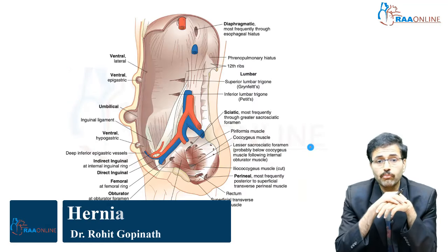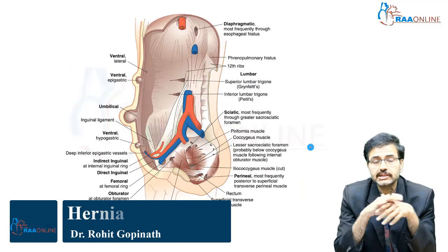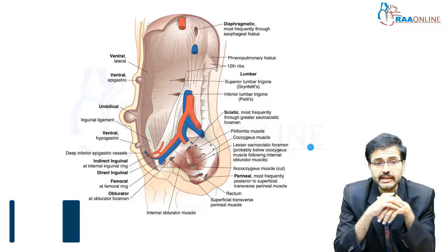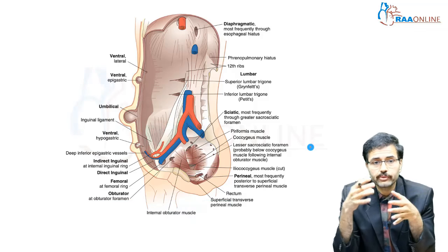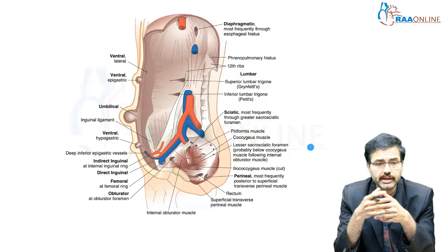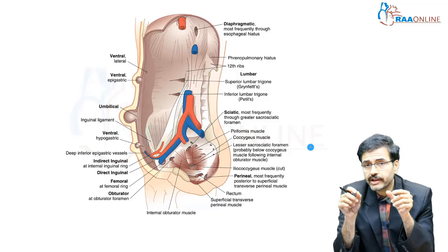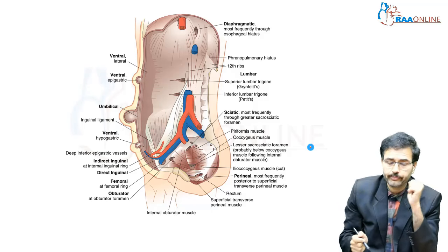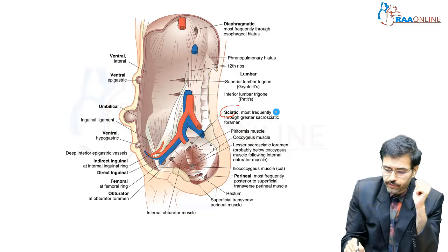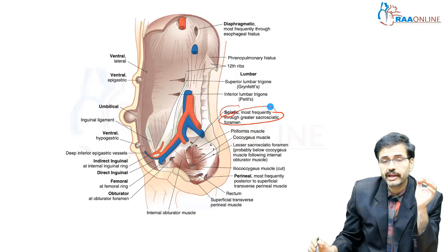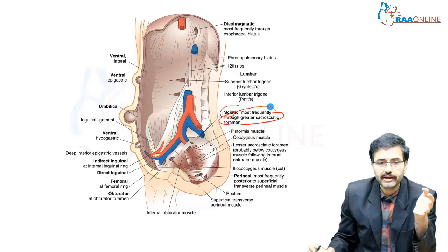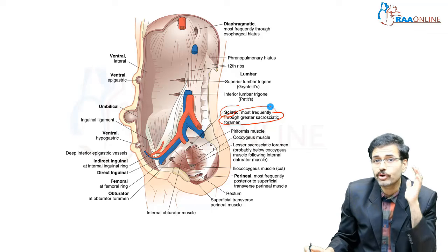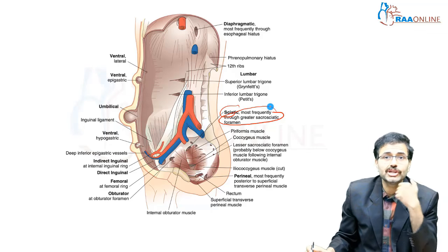This is a more detailed diagrammatic representation of what was shown in the previous slide, showing where you can have a ventral and an umbilical hernia with specific mention regarding the exact site where each occurs. For example, a sciatic hernia most frequently occurs at the greater sacrosciatic foramen — it's a hernia which is not very commonly mentioned or heard of.